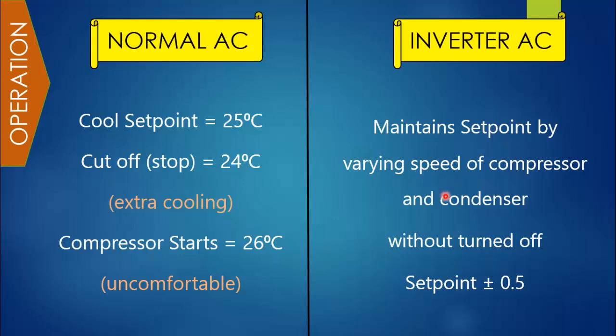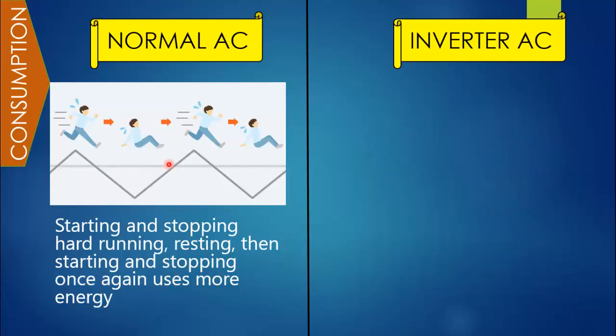Whereas the inverter AC maintains the setpoint by varying the speed of the compressor and condenser without turning off. It will change its speed around the setpoint plus or minus 0.5°C, so it will maintain the room temperature around 24.5 to 25.5°C without ever turning off.